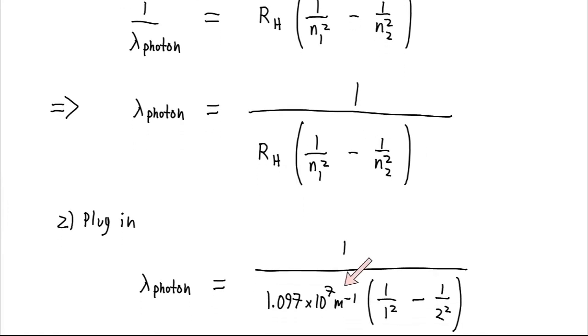And then we can just plug in all these values here. We'll stick in the Rydberg constant for hydrogen. And we'll put the smaller number first for n1 and the larger number second for n2. So, 1 over 1, that's 1. 1 over 2 squared, that's a fourth. So, 1 minus a fourth is three-fourths. So, we have this times three-fourths.